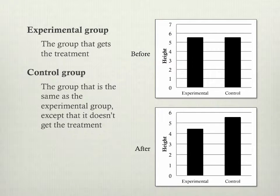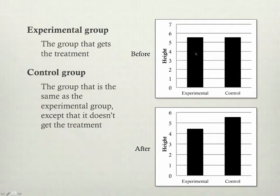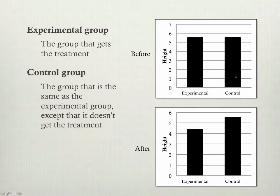So when you're doing this kind of thing with experiments, one of the important issues that comes up is how you decide which people go in each of these groups — which people go in the experimental group and which go in the control group — because you've got a group of people and you have to decide how to split them up.